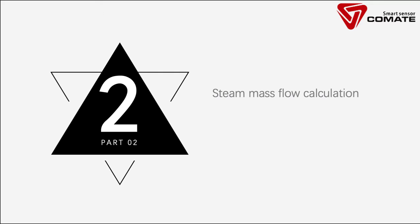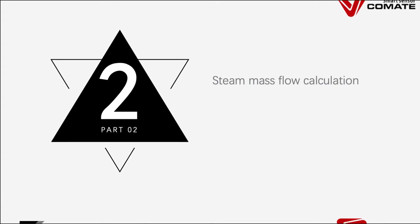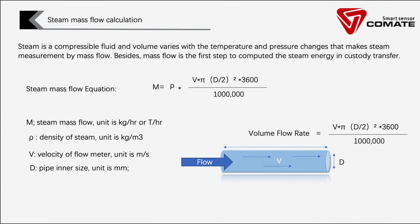Now I'm going to show you how to calculate the mass flow rate of steam. Because the volume of steam varies with temperature and pressure changes, we need to use mass flow as the unit in the steam measurement system. Besides, mass flow is the first step to calculate the steam energy in heat capacity transfer.